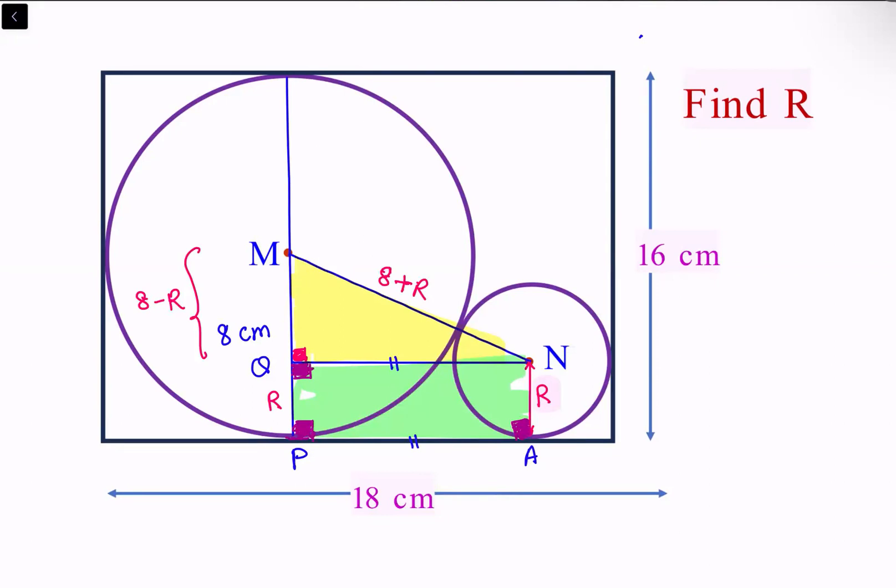This length is the radius of the bigger circle, which is 8 centimeters. The other length is the radius of the smaller circle, which is R. So PA is 18 minus 8 minus R, which equals 10 minus R. Thus QN is also 10 minus R.